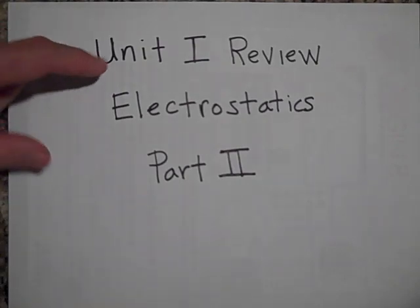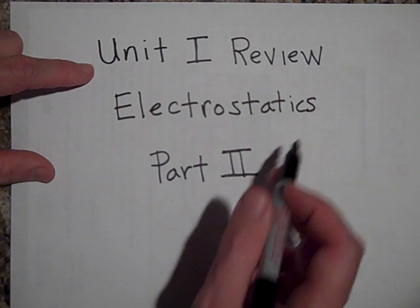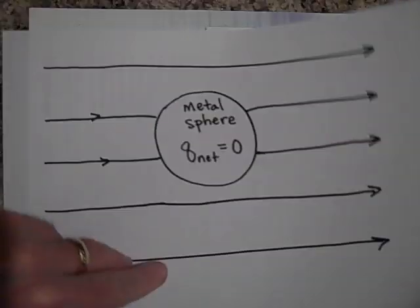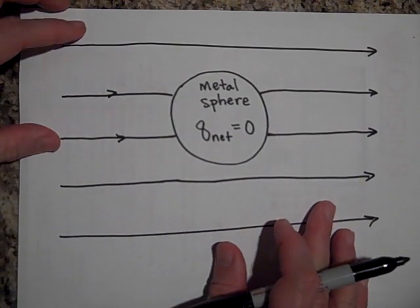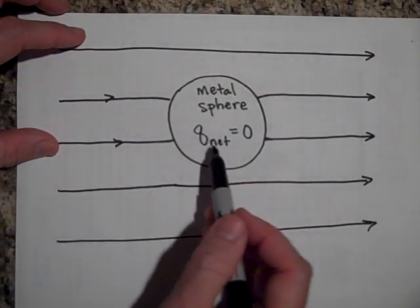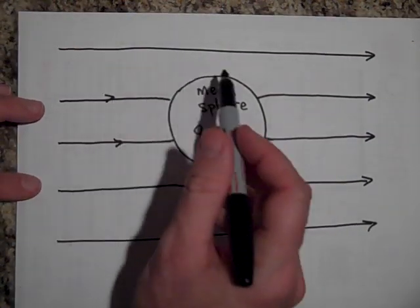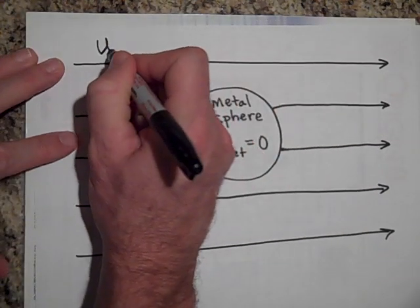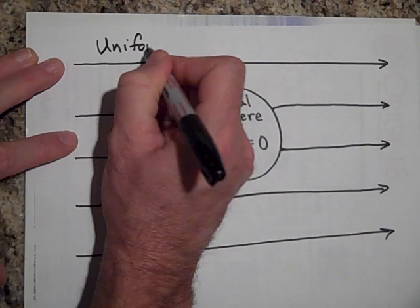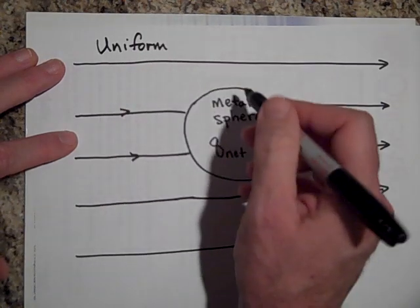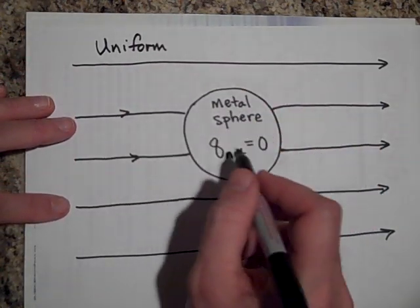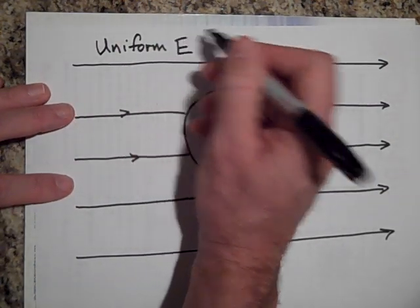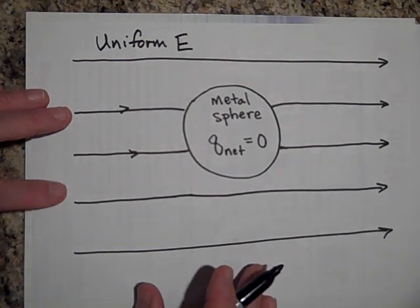Welcome back. This is Unit I review of Electrostatics part two. All right, so we have a metal sphere that has no net charge that we placed in a uniform electric field. It turns out it's not so uniform once you place this in here. You get some strange things happening with the field lines, but this is a uniform electric field and this is a metal sphere that you put in there.